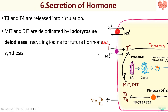The final step is secretion of hormone. T3 and T4 are released into the circulation, while MIT and DIT are de-iodinated so the iodine can be reused. The enzyme required to de-iodinate MIT and DIT is called iodotyrosine deiodinase, which helps in recycling iodine. These are the different steps of thyroid hormone synthesis.